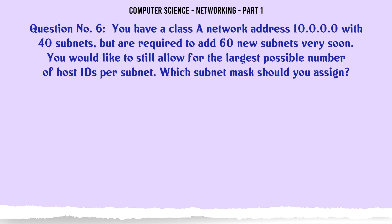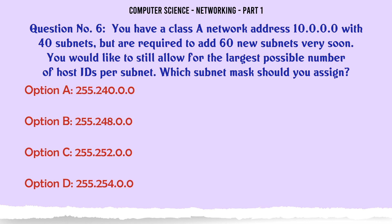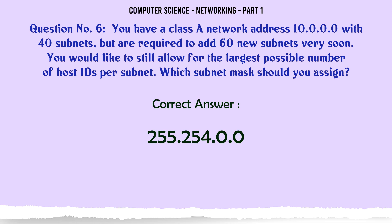You have a class A network address 10.0.0.0 with 40 subnets, but are required to add 60 new subnets very soon. You would like to still allow for the largest possible number of host IDs per subnet. Which subnet mask should you assign? A. 255.240.0.0. B. 255.248.0.0. C. 255.252.0.0. D. 255.254.0.0. The correct answer is: 255.254.0.0.